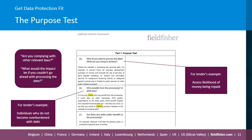Therefore, these benefits are vital to the proper functioning of the credit system. So in this example, the lenders would have demonstrated a clear and specific legitimate interest, and have a good foundation for moving on to the second part of the test, which is demonstrating necessity.